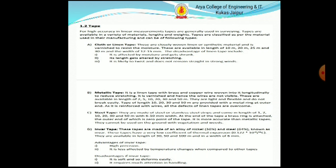Steel tapes: they are made of steel and stainless steel strips and come in lengths of 1 to 10, 20, 30 and 50 meters, width 6 to 10 mm. At the end of the tape, a brass ring is attached. The outer end of the tape is the zero point. It is more accurate than metallic tape. They cannot be used on ground with vegetation and weeds.